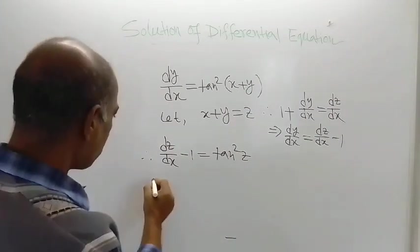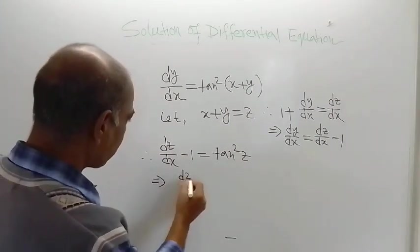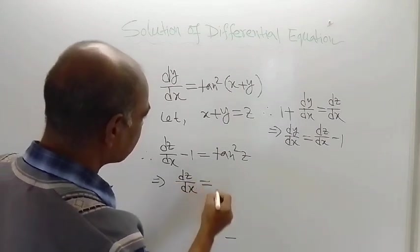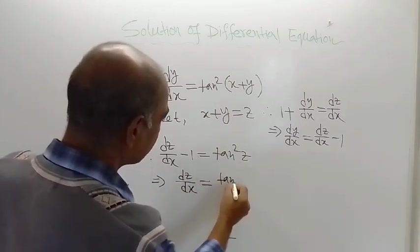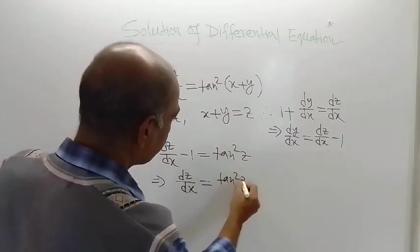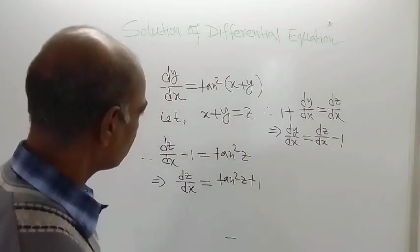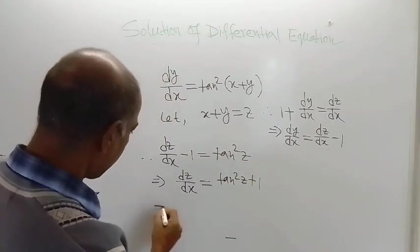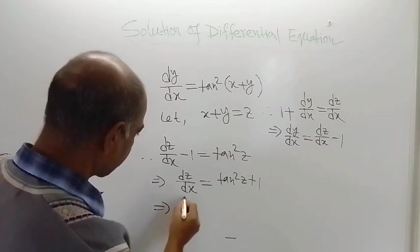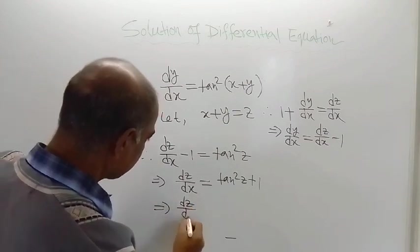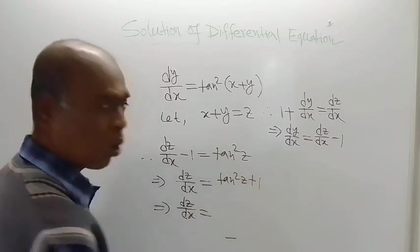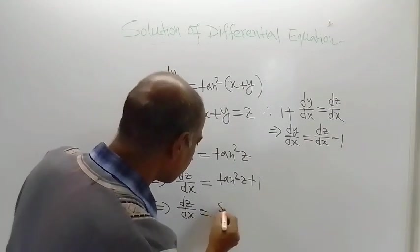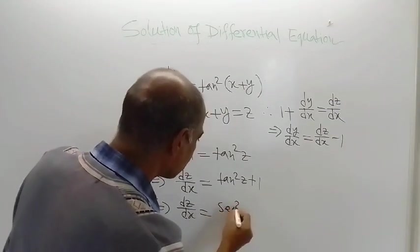So in the next line we get dz/dx equal to tan square z plus 1. And 1 plus tan square z is nothing but sec square z, as you know.